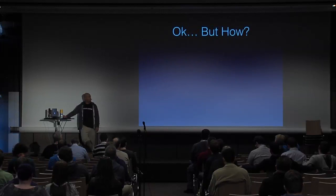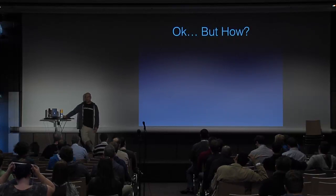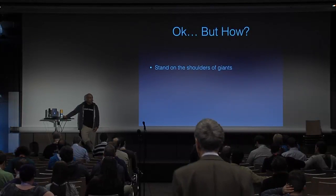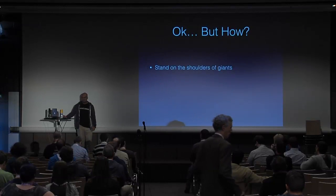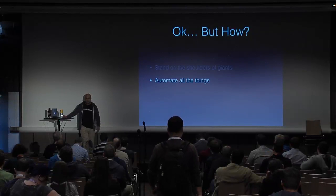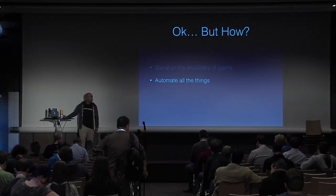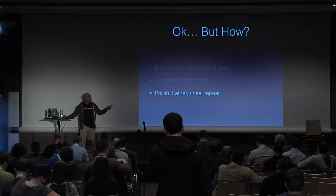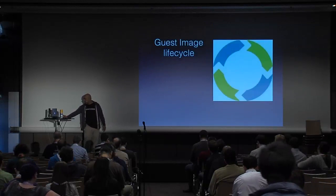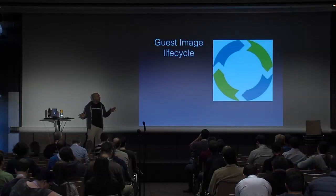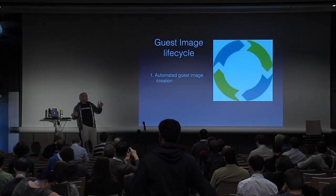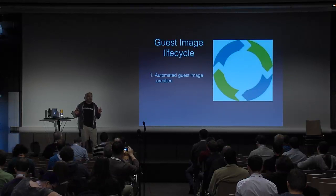So how do we get to image lifecycle? There are a lot of great tools already in existence. Like we saw in the keynote, we should stand on the shoulders of giants — we shouldn't be reinventing the wheel. This is OpenStack; we like to automate all the things. This provides for a repeatable process that can be managed by anyone. Most importantly, this is not a one-shot deal. This is something we need to get right and then do it over and over and iterate.